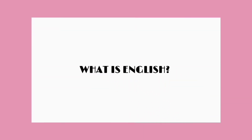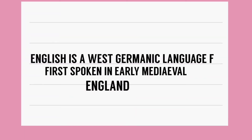सबसे पहले हम देखते हैं कि English क्या है। English is a West Germanic language, first spoken in early medieval England. यह Germanic tribes की language थी और early medieval England में बोली जाती थी। आज English को international language कहा जाता है — यह इतनी popular क्यों हुई और किस तरह generate की गई?